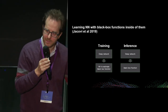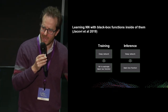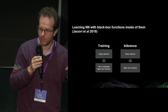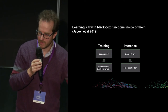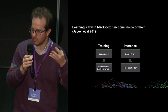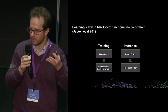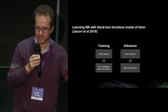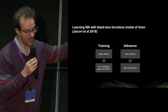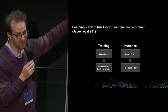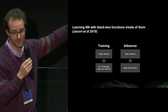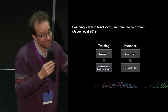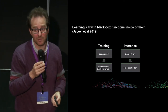You can see the gap between the aspirations in 2014 — learning programs directly from examples using a neural Turing machine — and where we are in 2019, which have been much reduced, simply because it's hard.